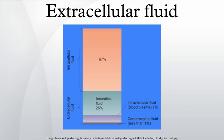Interstitial fluid makes up 16% of human body weight, and blood plasma makes up 4%.